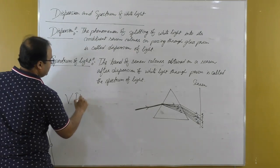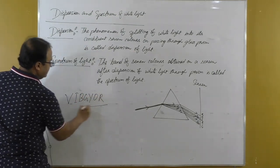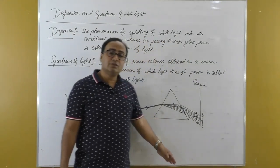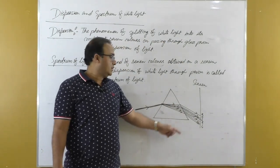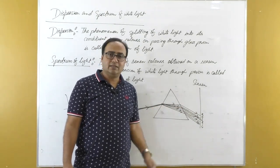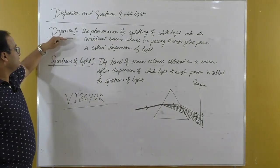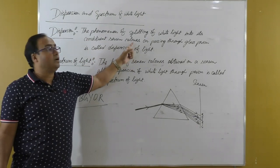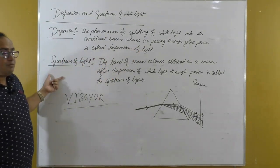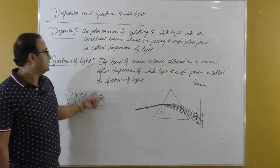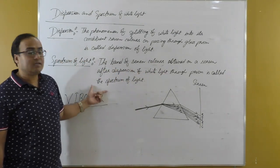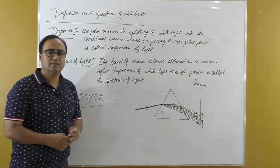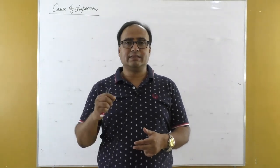If we allow white light to pass through a prism, it splits into its constituent seven colors: violet, indigo, blue, green, yellow, orange, and red. Which color deviates the most? It is violet. Which colored light deviates the least? It is red. Note down the definitions: Dispersion — the phenomenon of splitting of white light into its constituent seven colors on passing through a glass prism is called dispersion of light. Spectrum of light — the band of seven colors obtained on a screen after dispersion of white light through a prism is called spectrum of light.